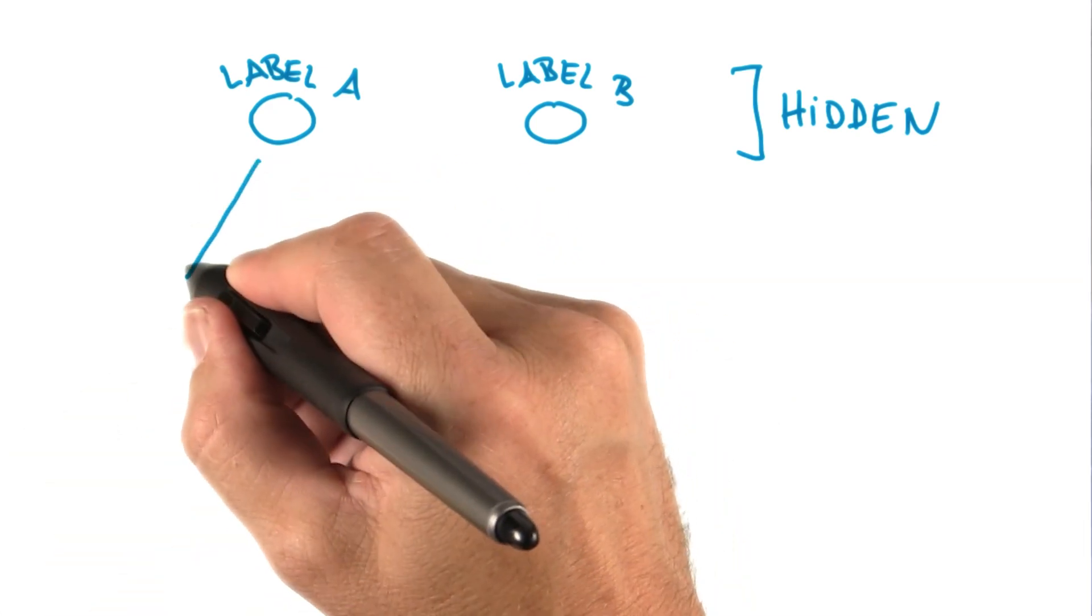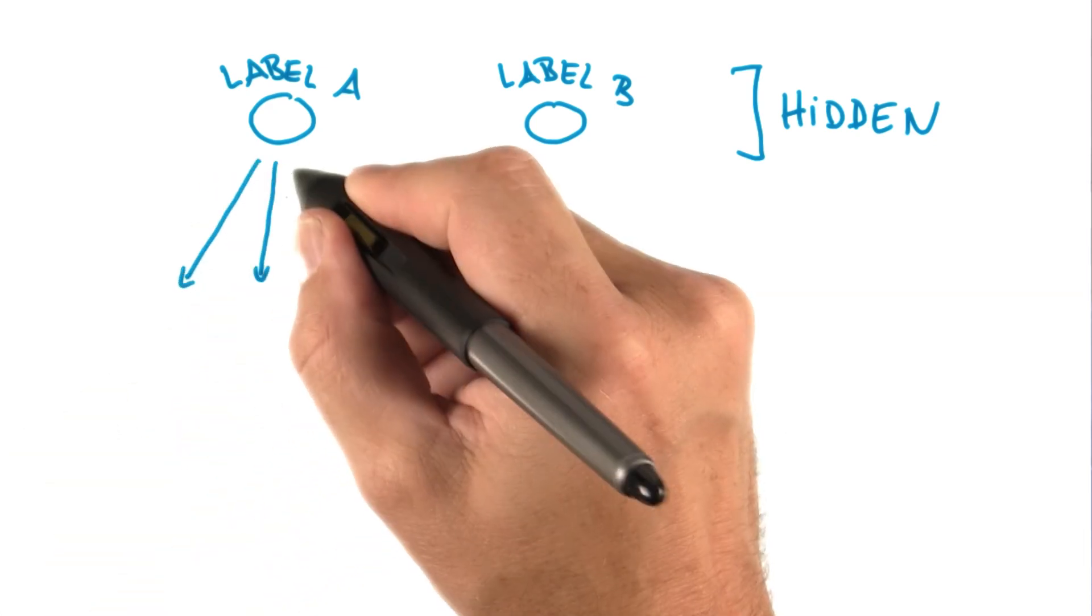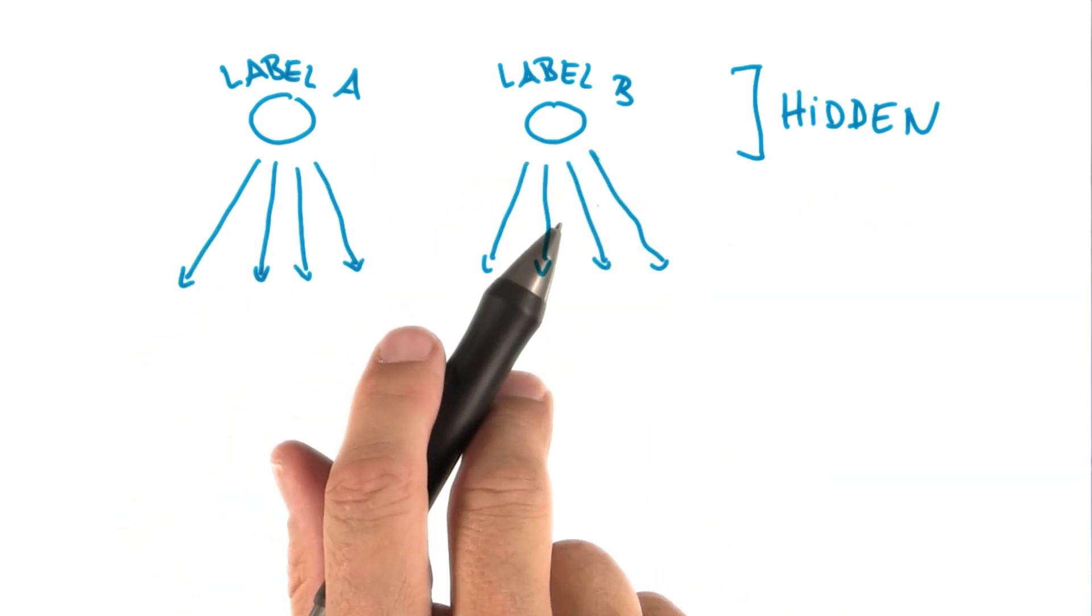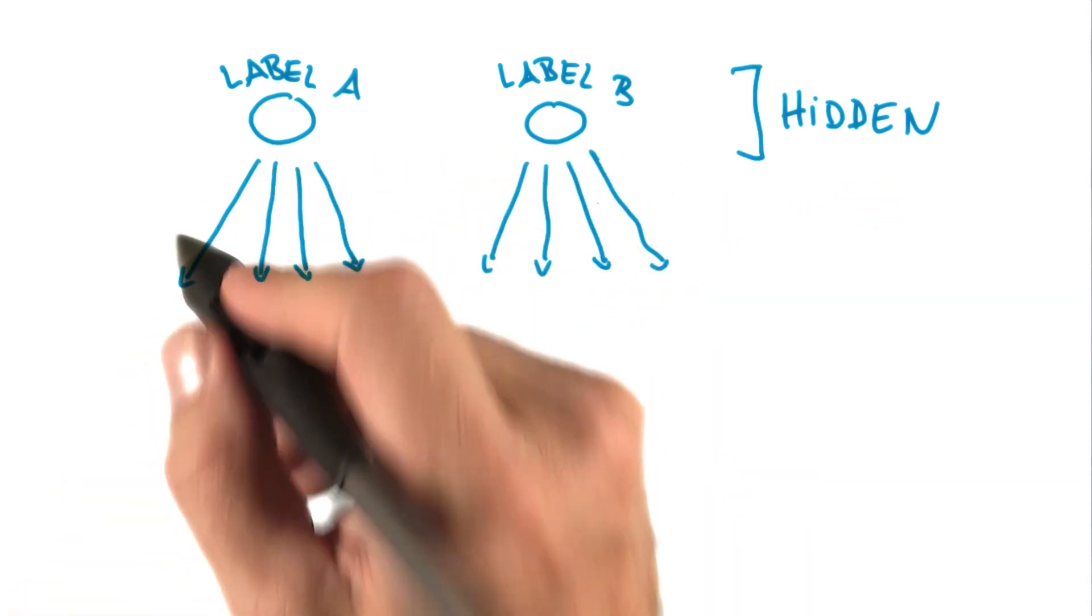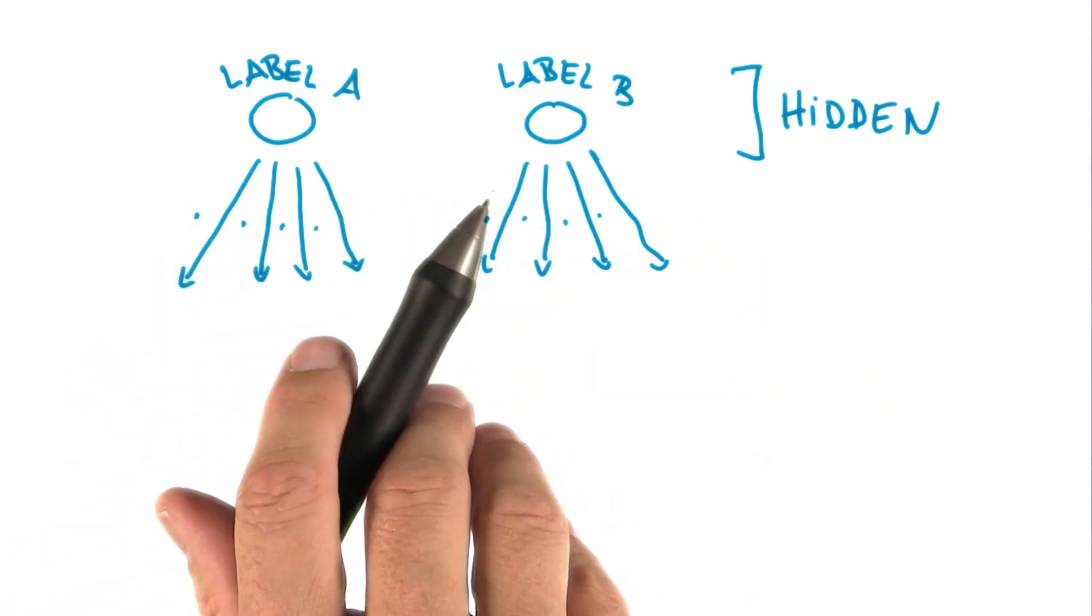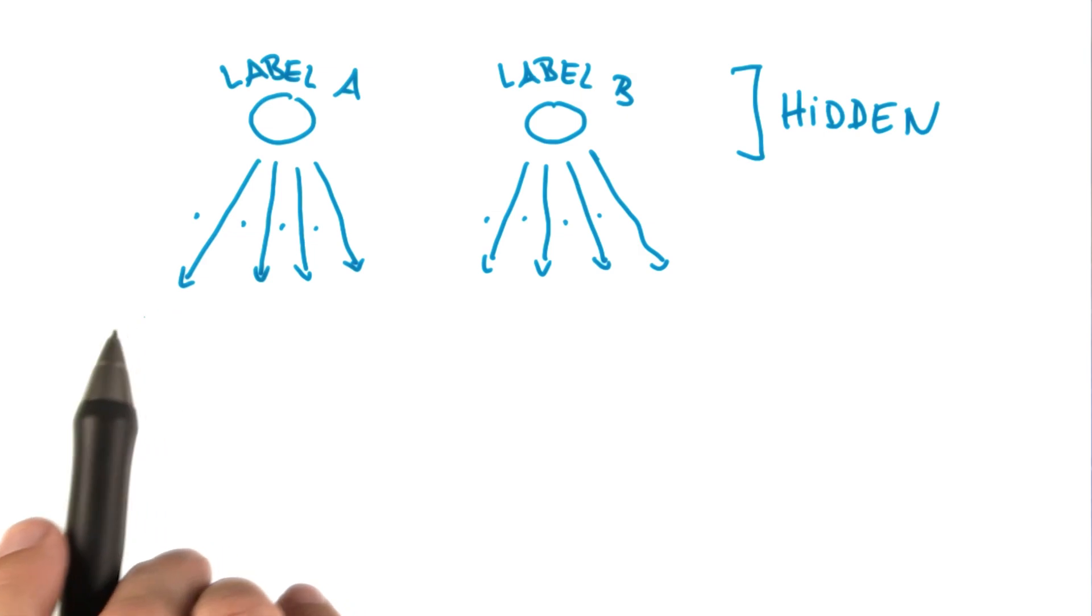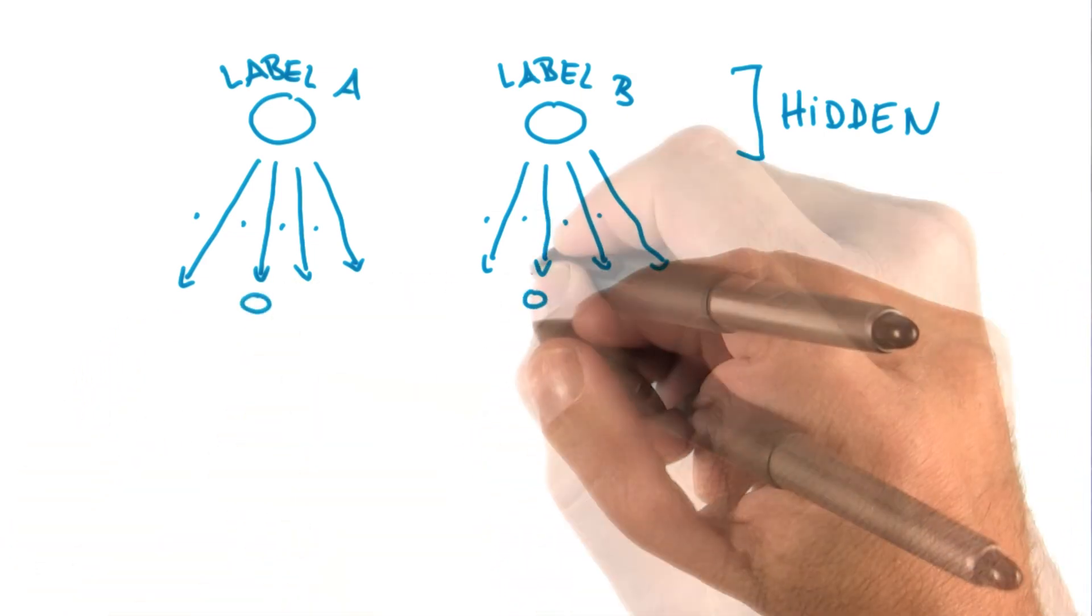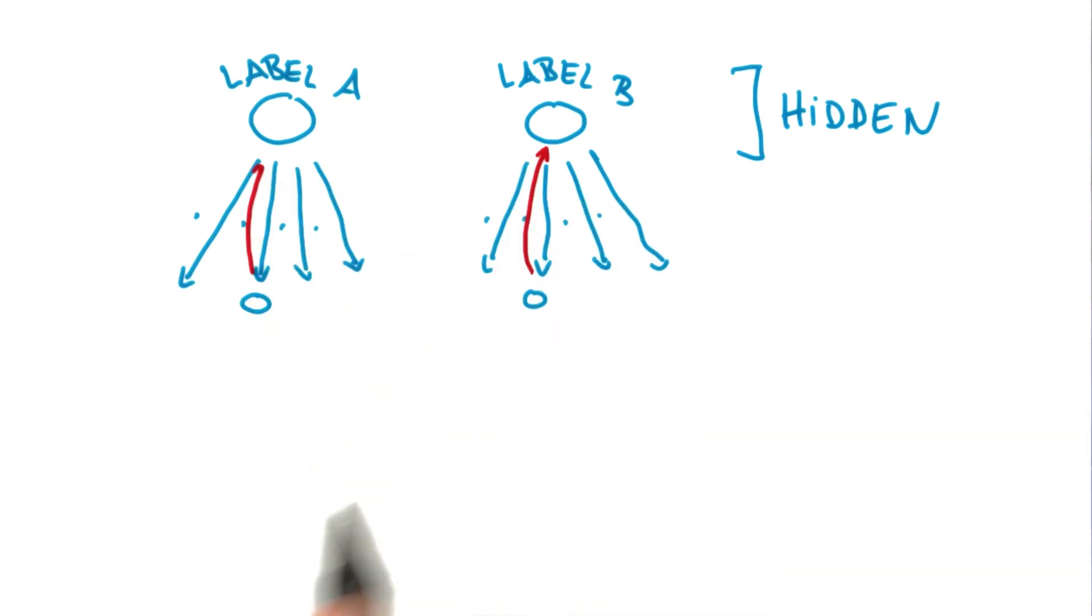And what you get to see instead are things these things do, like words they use. If they use them with exactly the same probability, you could never figure out who it is. But they use them with different probabilities. And they might use one of them, or a hundred, or a thousand. But every word that you see, like this one over here, gives you evidence as to whether it was person A or person B.